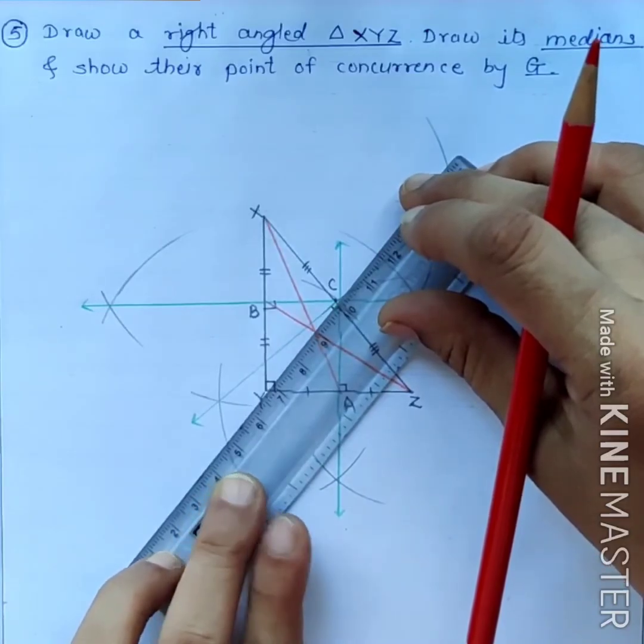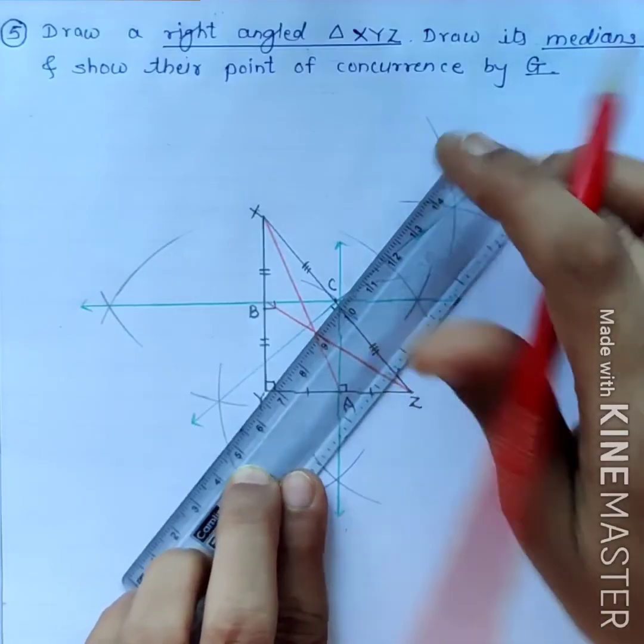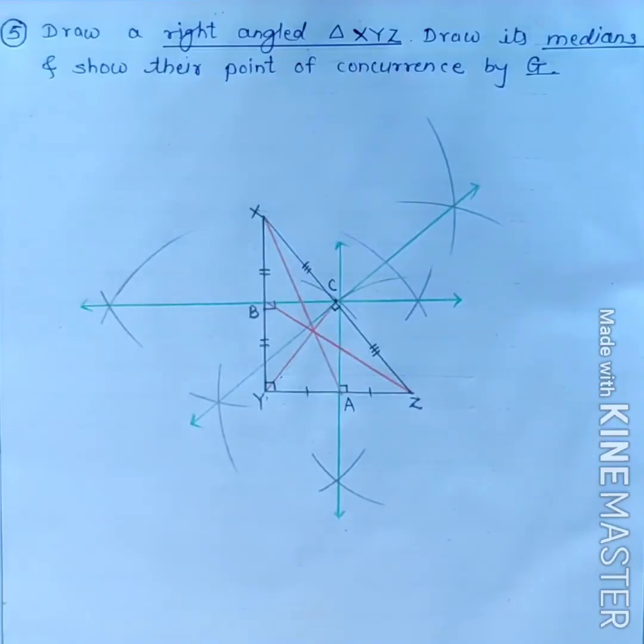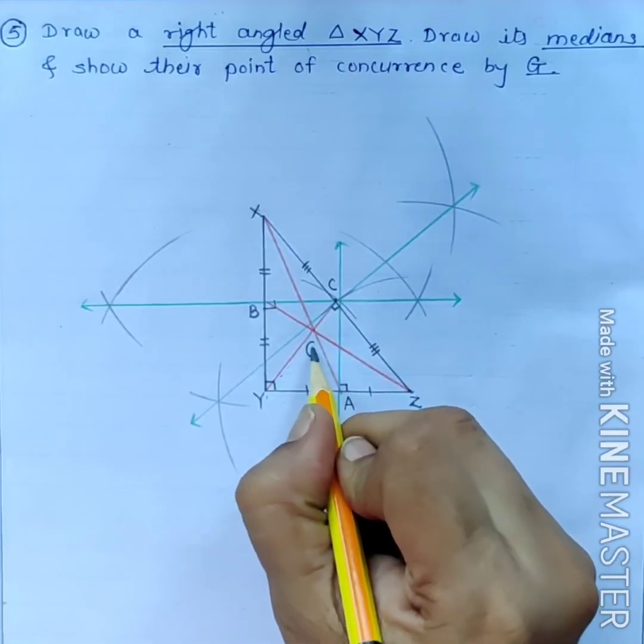Y and C. Point Y and point C. This is the third median. And this is the point of concurrence denoted by letter G.